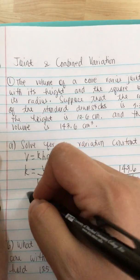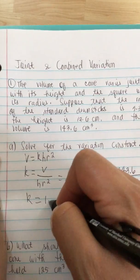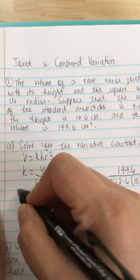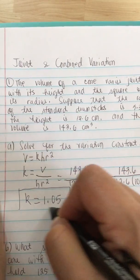So now we find K. We have K is equal to 1.05. So this is the answer for A.